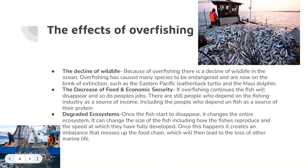Degraded ecosystems. Once the fish start to disappear, it changes the entire ecosystem. It can change the size of the fish, including how fish reproduce and the speed at which they fully develop. Once this happens, it creates an imbalance that disrupts the food chain, which will then lead to the loss of other marine life.